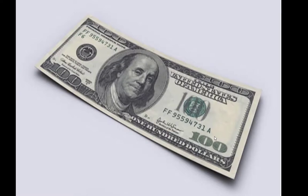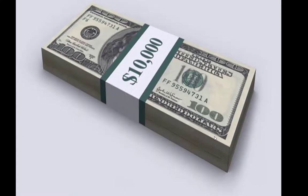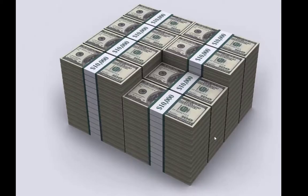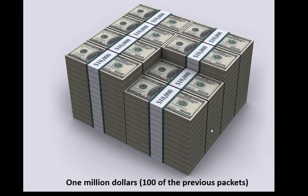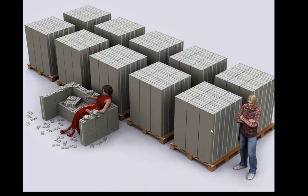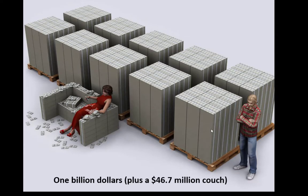Let's talk money. Here's a $100 bill — not to scale. That's 100 $100 bills, otherwise known as $10,000, wrapped up for you. That right there is a million bucks — that's if you take 100 of the previous $10,000 packets. Now, none of these pictures were to scale, so let's make it to scale. That's what a billion dollars would look like — we've got a six-foot-tall guy standing next to it, we've got 10 pallets of money you could move around with a forklift.